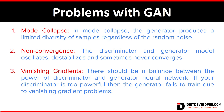The third problem is vanishing gradient. There should be a balance between the power of the discriminator and the generator neural network. If your discriminator is too powerful, the generator fails to train due to the vanishing gradient problem. We should balance the number of parameters and learning ability of both the generator and the discriminator so they are equal to each other, since training in GAN is like a competition between two players — we need to give equal power to both parties.